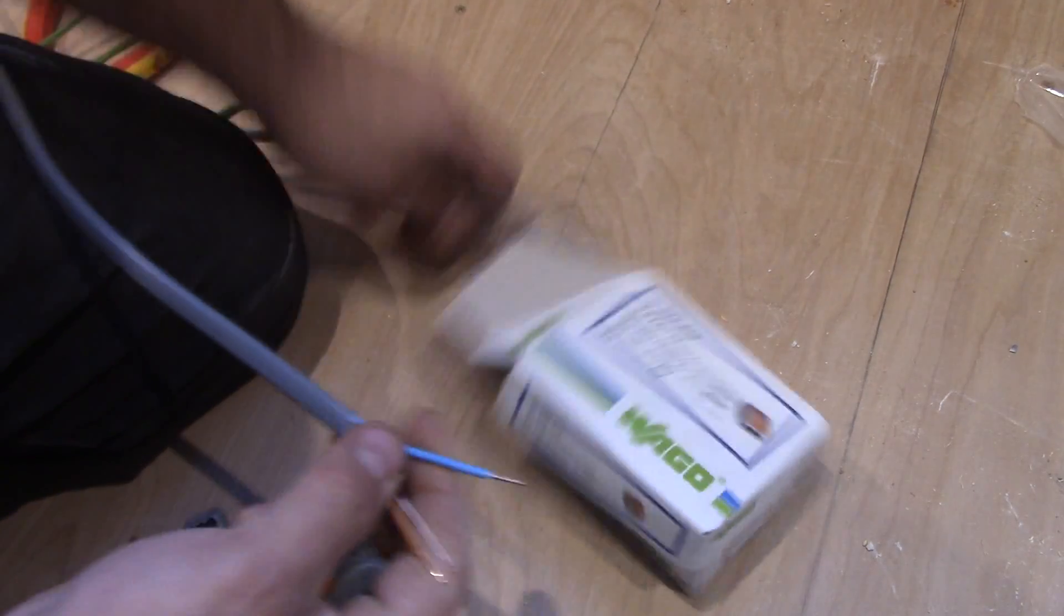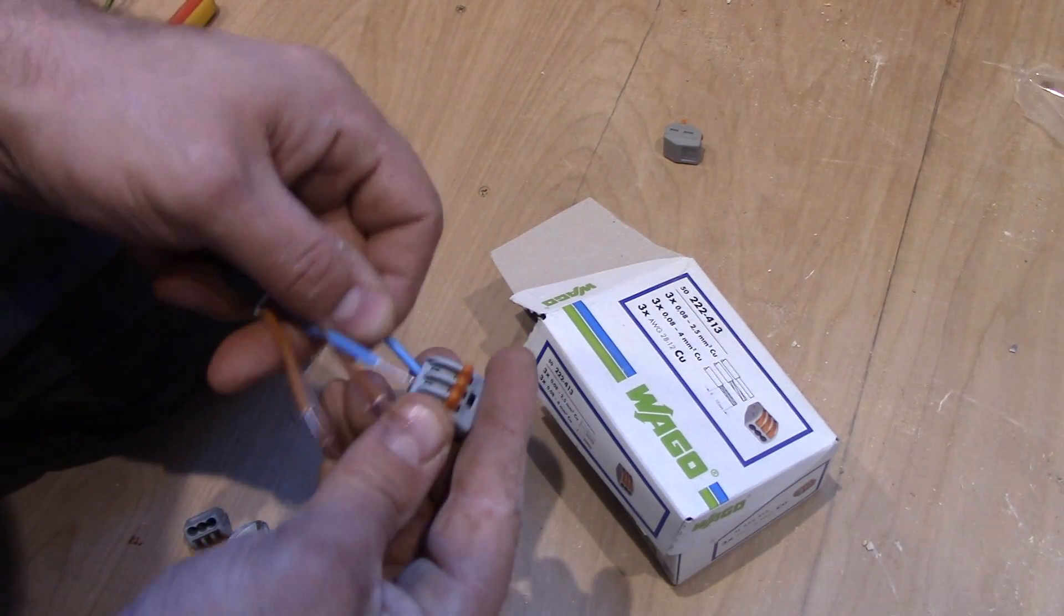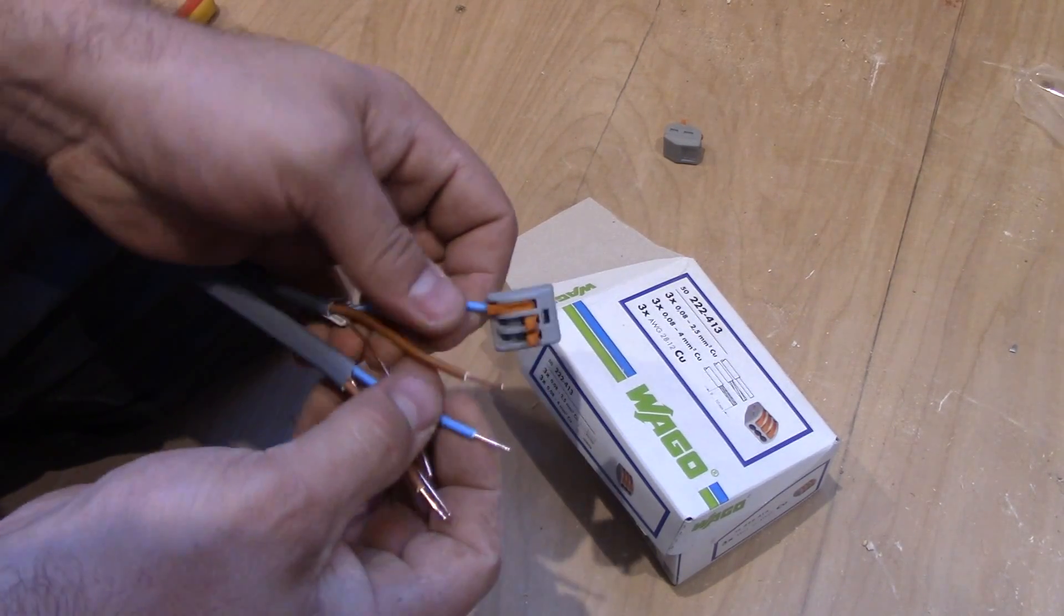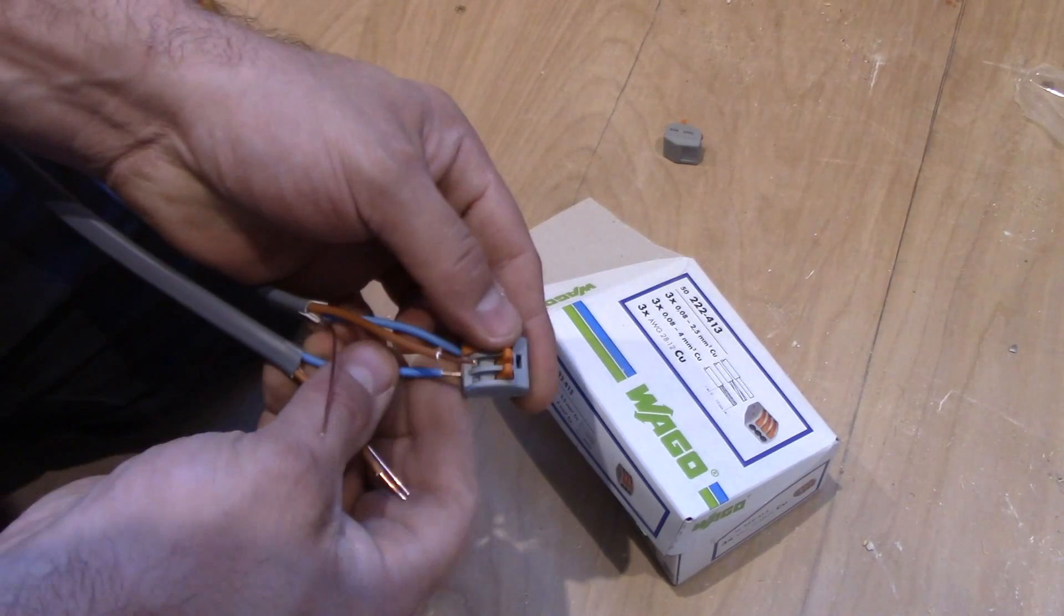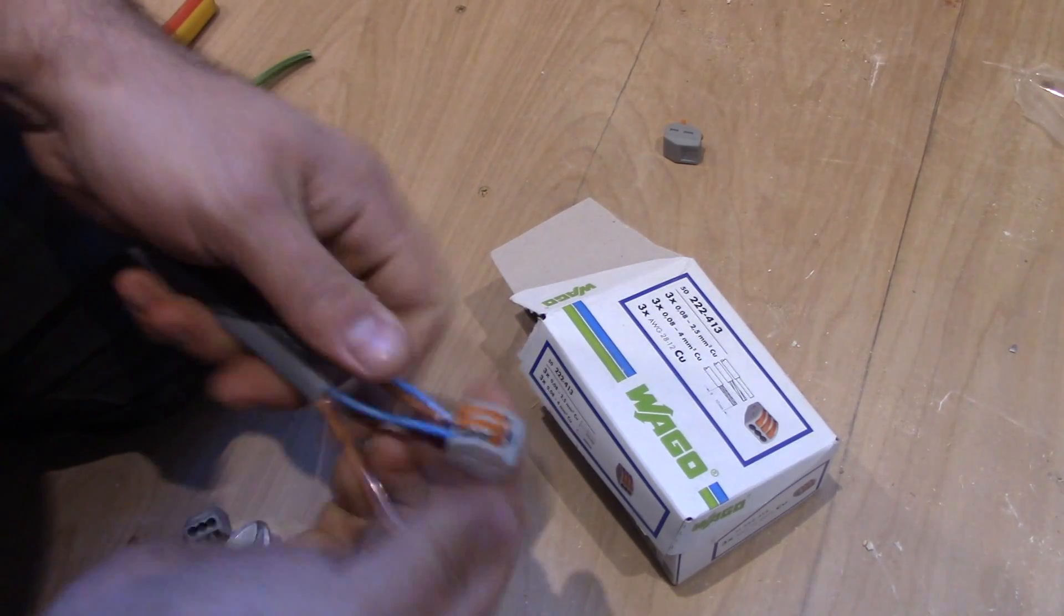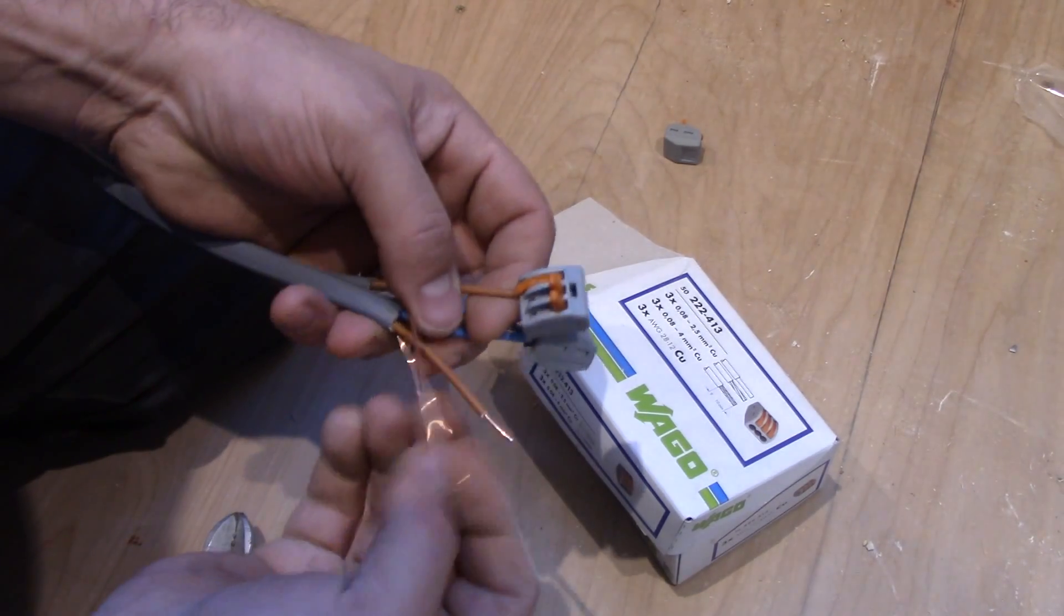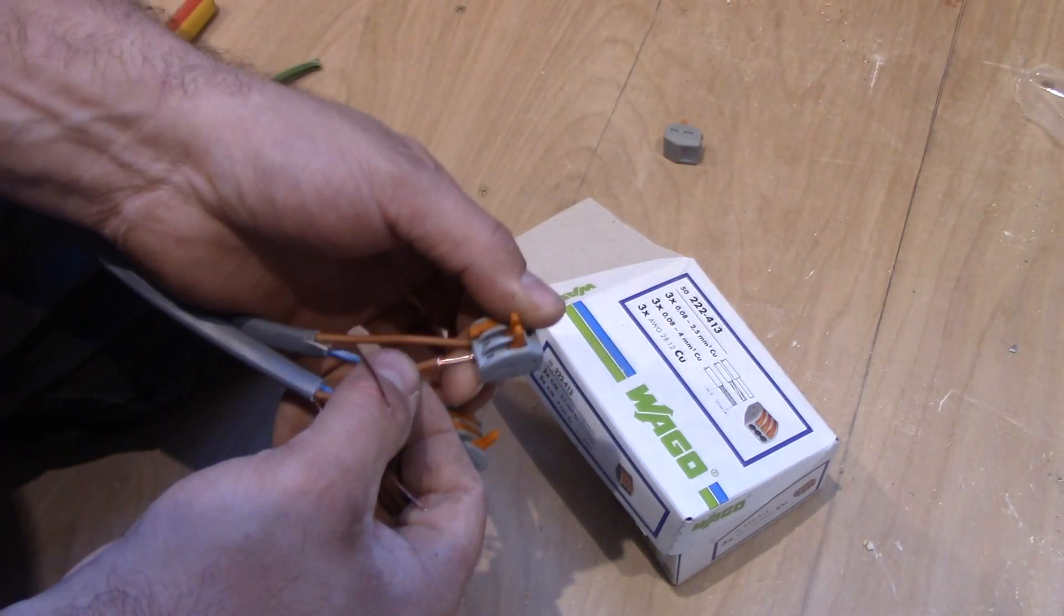So if you want to join two cables, you can use two-way. This is three-way but I just want to show you how to use it. So neutrals are connected, then you connect the wire together.